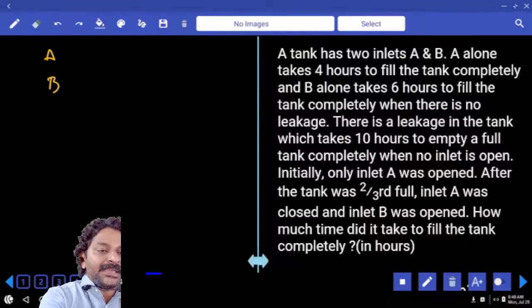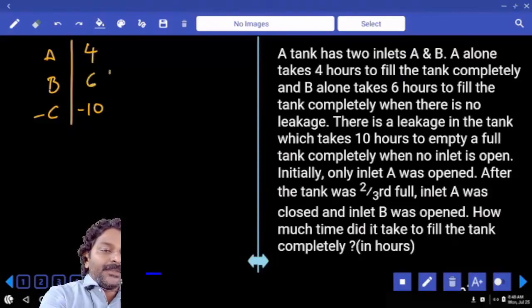Now we have three pipes A, B, C. C is an outlet which can empty the tank in 10 hours. A can fill the tank in 4 hours, B in 6 hours.